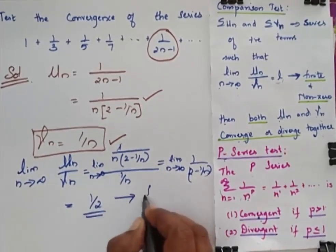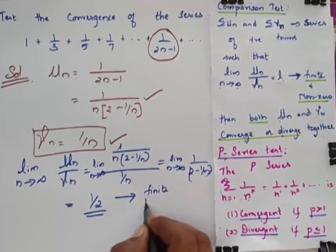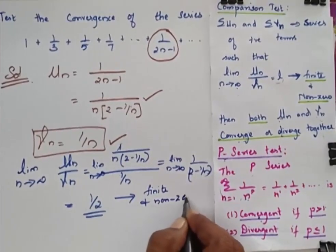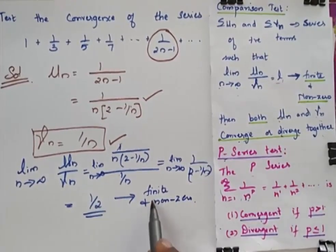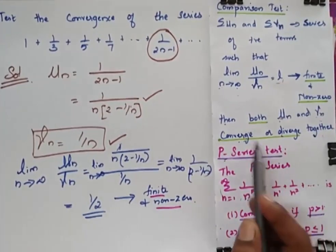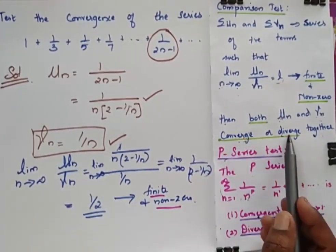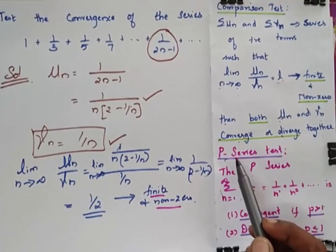This 1 by 2 is finite and non-zero. So when this is finite and non-zero, in order to find out whether it converges or diverges, I should go for this P series test.